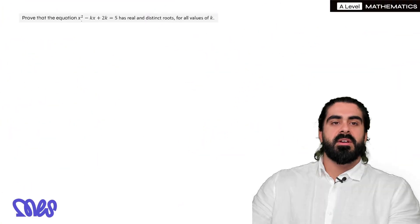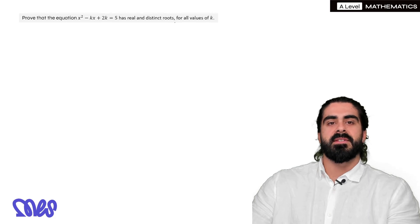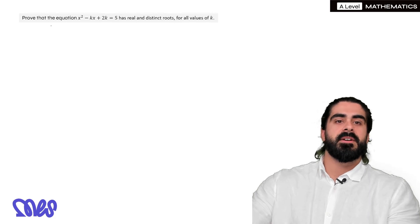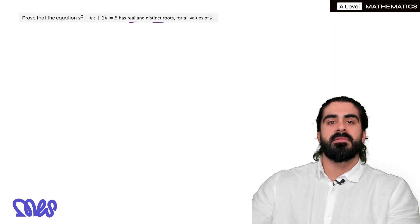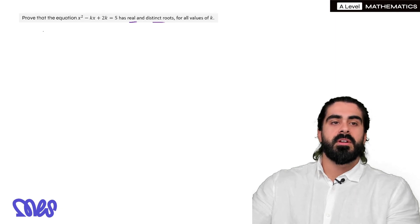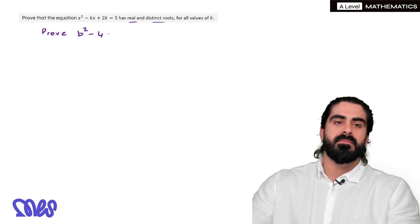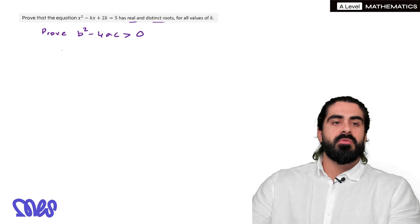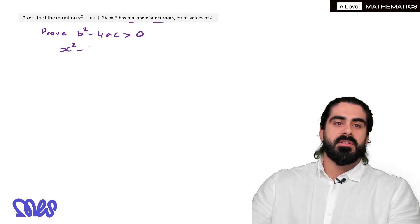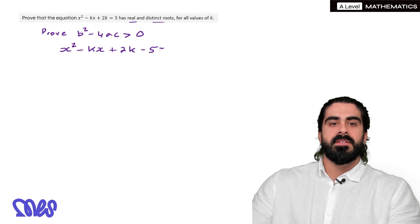Prove that the equation x squared minus kx plus 2k equals 5 has real and distinct roots for all values of k. Real and distinct roots is to do with discriminant being positive we need to prove. So essentially they're saying prove that the discriminant is always positive. Well let's rearrange first, x squared minus kx plus 2k minus 5 equals 0.